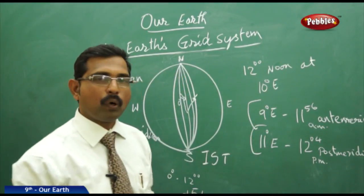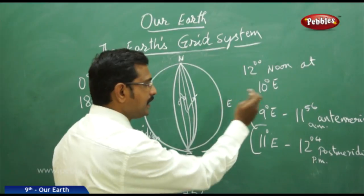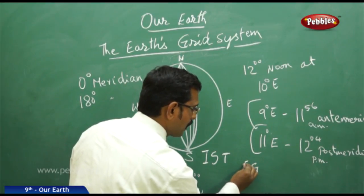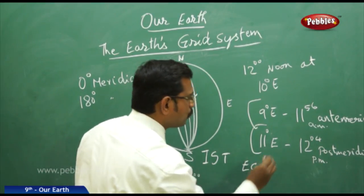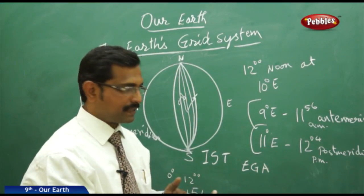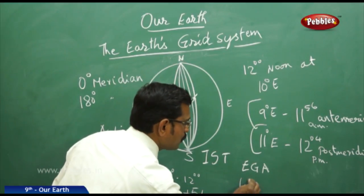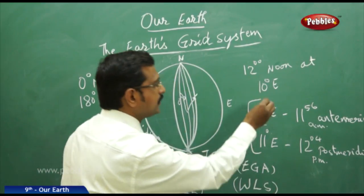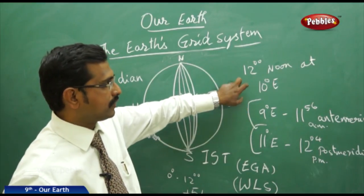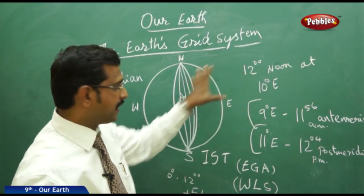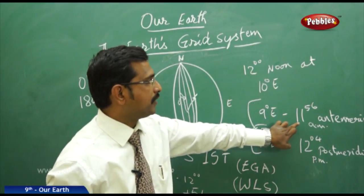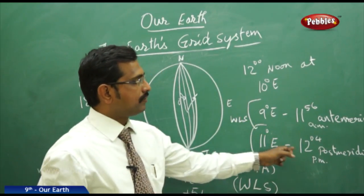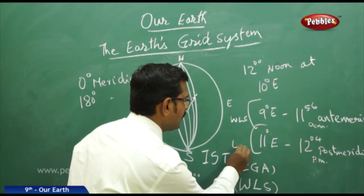Every country has its own standard time, just like India has IST. One important rule: if you are going toward the east, it is east gain — you add minutes. If you are going toward the west, it is west loss — you subtract. So moving east from the prime meridian, you gain time, and moving west, you lose time.